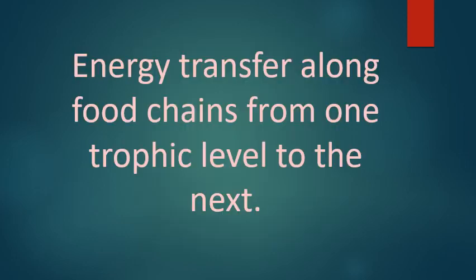Now we know that energy is transferred along food chains from one trophic level to the next, but the amount of available energy decreases from one trophic level to the next. The following video will explain how.